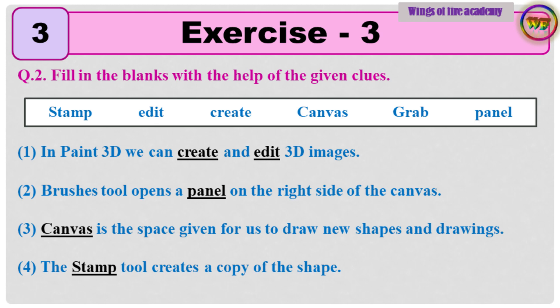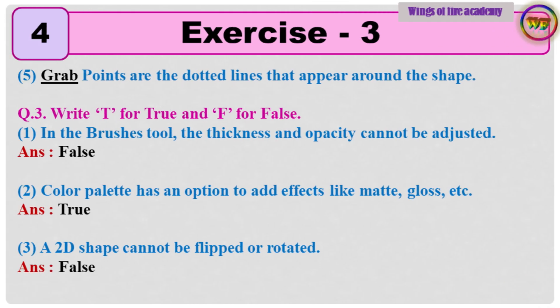Question number 2: Fill in the blanks with the help of the given clues — Stamp, Edit, Create, Canvas, Grab, Panel. 1. In Paint 3D we can create and edit 3D images. 2. Brushes tool opens a panel on the right side of the canvas. 3. Canvas is the space given for us to draw new shapes and drawings. 4. The Stamp tool creates a copy of the shape. 5. Grab points are the dotted lines that appear around the shape.